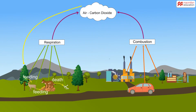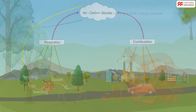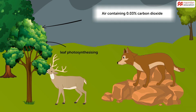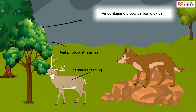This diagram shows a simple carbon cycle, illustrating the circulation of carbon between the living and non-living world. The only way carbon enters the living world is from carbon dioxide in the air into plants by photosynthesis.